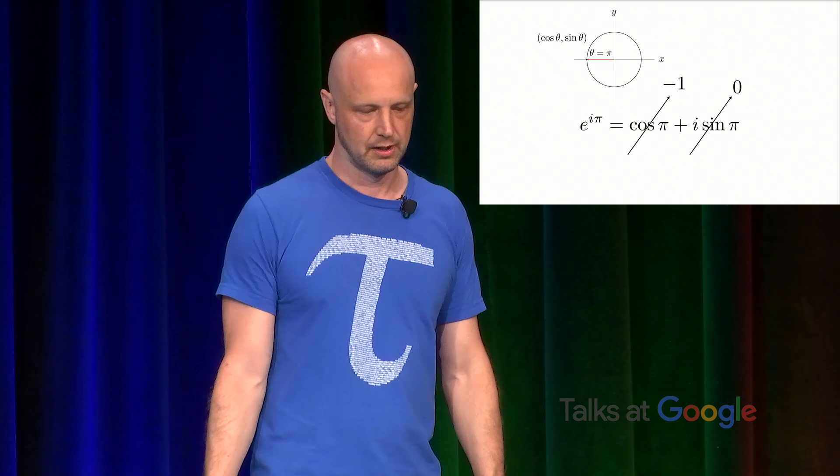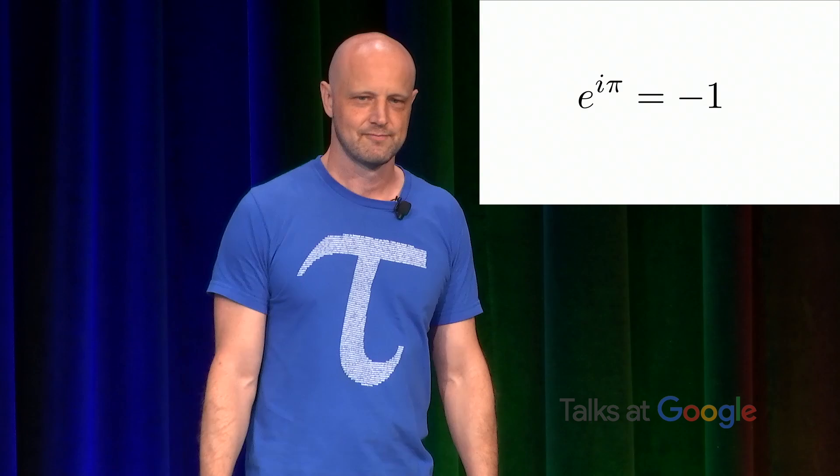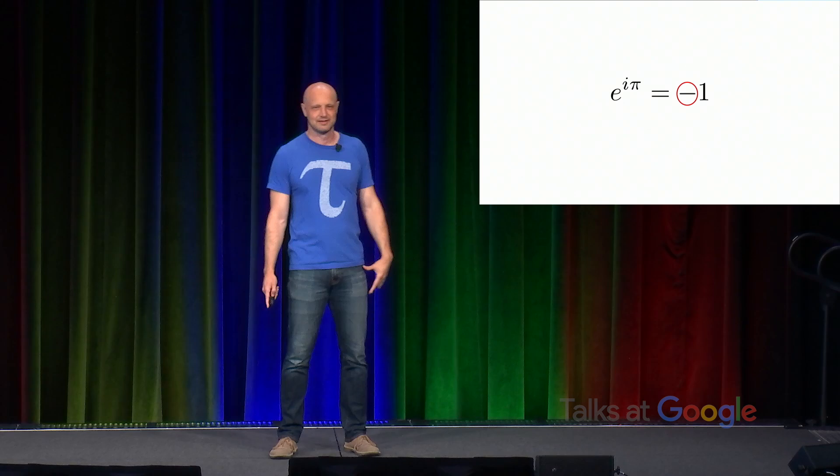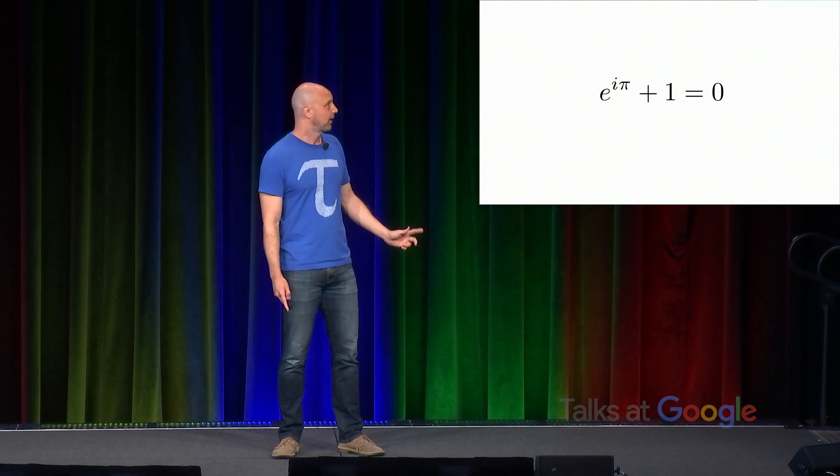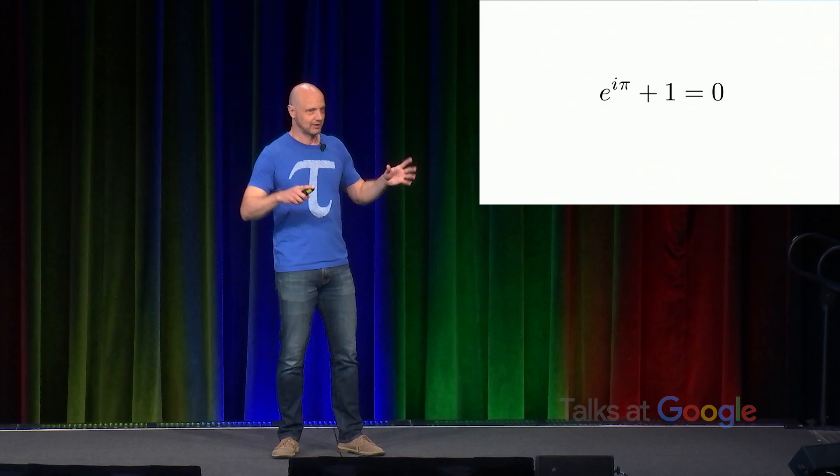But there's something fishy about this formula. What's going on with this negative sign? It's so ugly. In fact, this is almost always rearranged immediately to form E to the i pi plus one equals zero, at which point the expositor usually says something mystical like, ooh, this formula connects the five most important numbers in mathematics, zero, one, i, e, and pi.